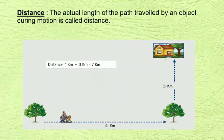So, let's know about distance. The actual length of the path traveled by an object during motion is called distance. For example, if a man is near one tree and wants to reach his home, and there is a road all around the garden, and he travels from one tree to another tree and then reaches the house — if one side of the road is 4 km and the other side is 3 km, then the total distance traveled by the man will be 4 km plus 3 km, that is 7 km.